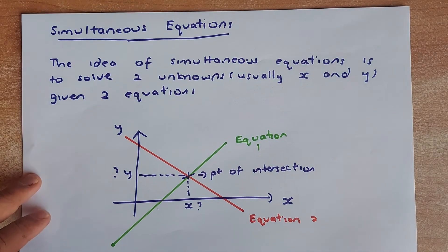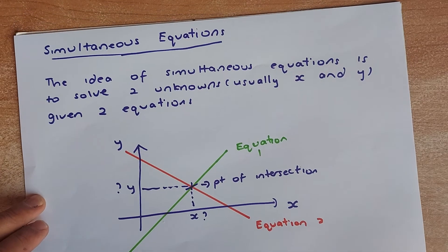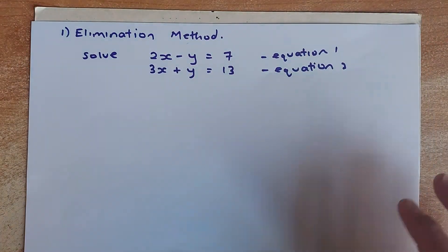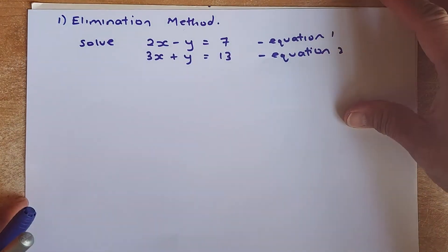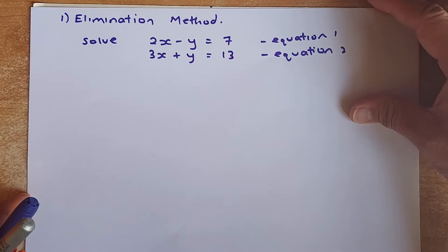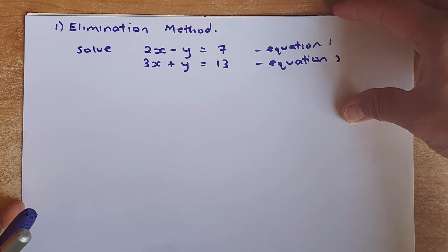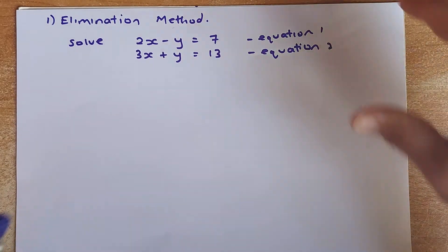Okay, we shall look at some examples now. There are two methods in simultaneous equations. The first method is called the Elimination Method, where you need to eliminate either the X or the Y.